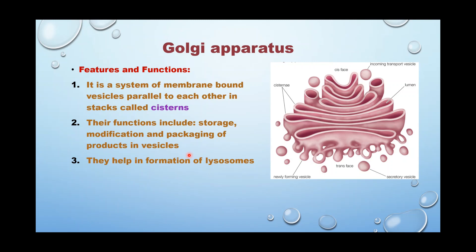Next is the Golgi apparatus. You see vesicles incoming and newly formed vesicles detaching from the Golgi apparatus. The main function of the Golgi apparatus is storage, and in some cases it modifies content and packages products in vesicles. It also helps in the formation of lysosomes. The structure consists of membrane-bound vesicles called cisterns, stacked almost parallel to one another.